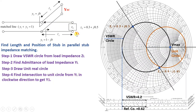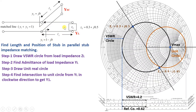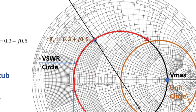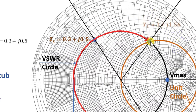Moving clockwise from YL towards the generator direction, the intersection with the unit real circle is reached. This intersection point is Y1. It has a unit real magnitude, and the imaginary magnitude is Y1 = 1 + j1.56.